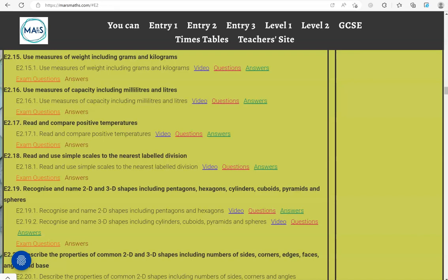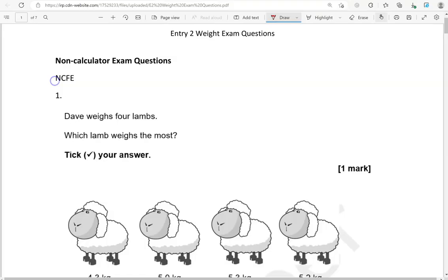In this video, we'll go through exam questions that cover the criteria using measures of weight, including grams and kilograms. You can locate the questions on the massmass.com website under Entry 2. The questions come from different exam boards. We'll start with the non-calculator questions, and then we'll move to the calculator questions.